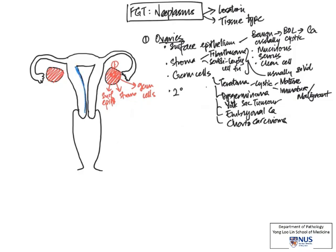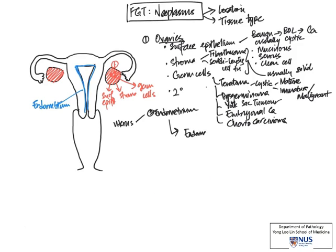The next site we're going to look at is the uterus, and here I'm outlining the endometrium. This is a very large and important component of the uterus, which gives rise to epithelial tumors — it's a glandular lining. Starting with endometrial tumors: these would be endometrial carcinomas if malignant, and sometimes they can be preceded by a premalignant phase of endometrial hyperplasia.